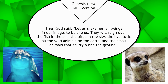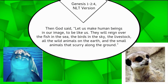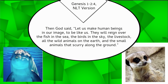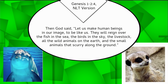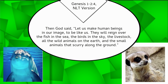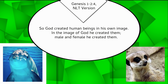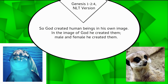Then God said, Let us make human beings in our image to be like us. They will reign over the fish in the sea, the birds in the sky, the livestock, all the wild animals on the earth, and the small animals that scurry along the ground. So God created human beings in His own image. In the image of God, He created them. Male and female, He created them.